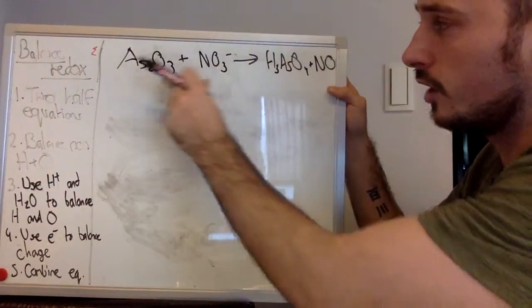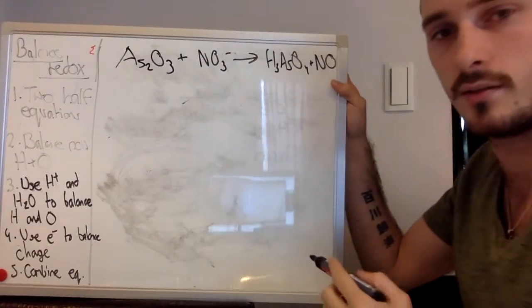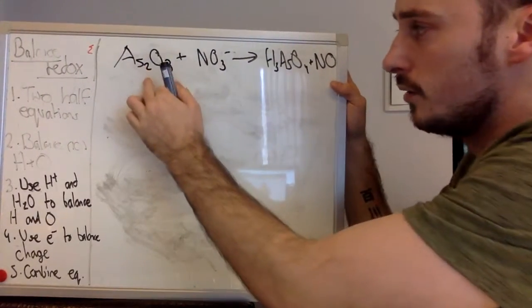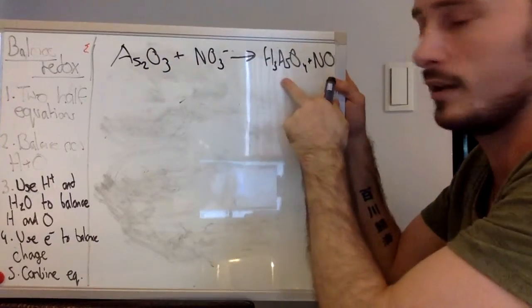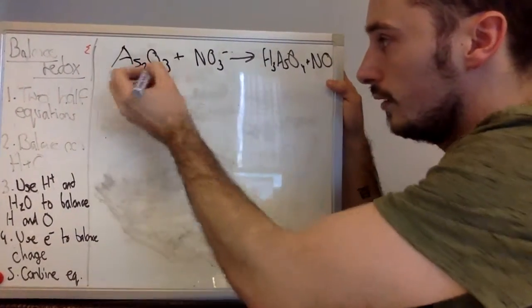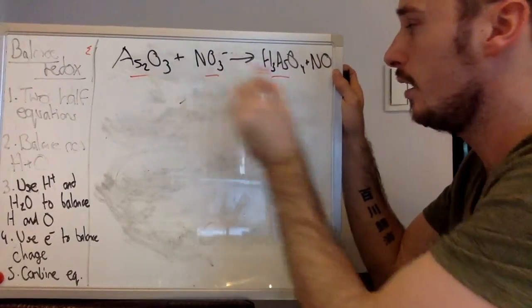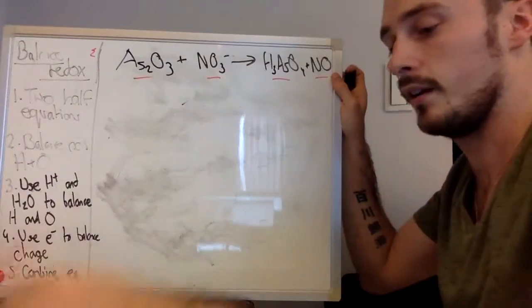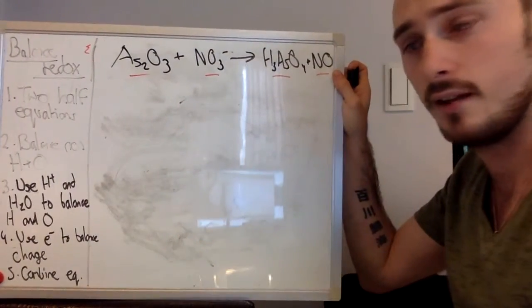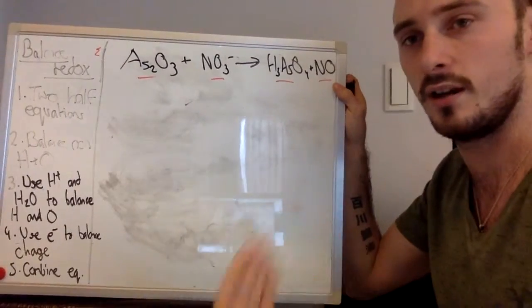So first, we have to turn this into two separate half equations, which is As2O3 becoming H3AsO4. That will be one of our equations. One and two. Then we have to show the NO3 minus becoming NO. Then we're going to combine those equations back together again, and see how much water, H plus, et cetera, et cetera, was needed.